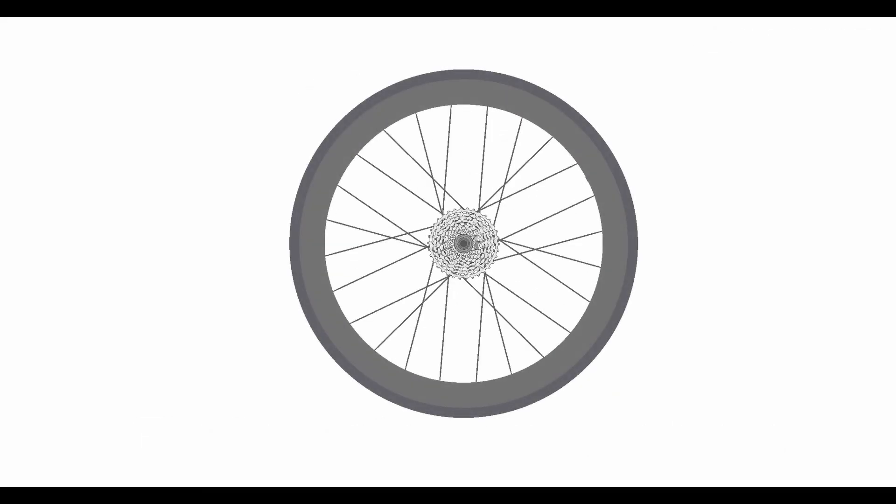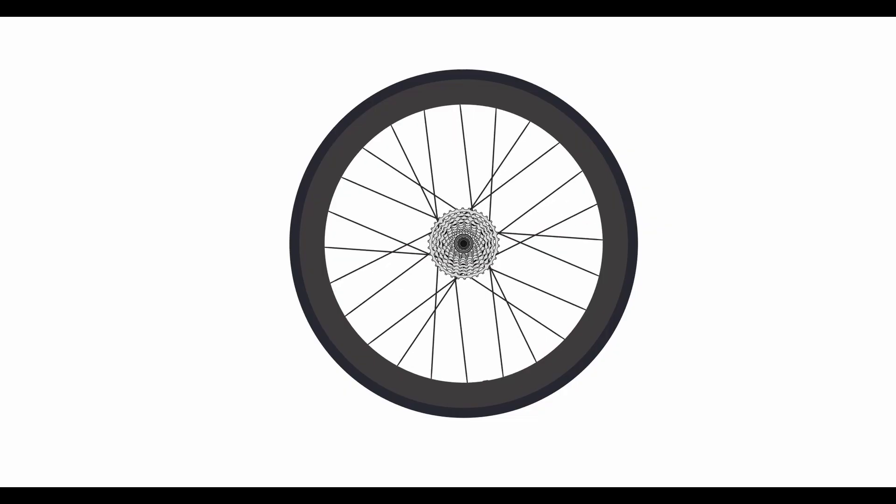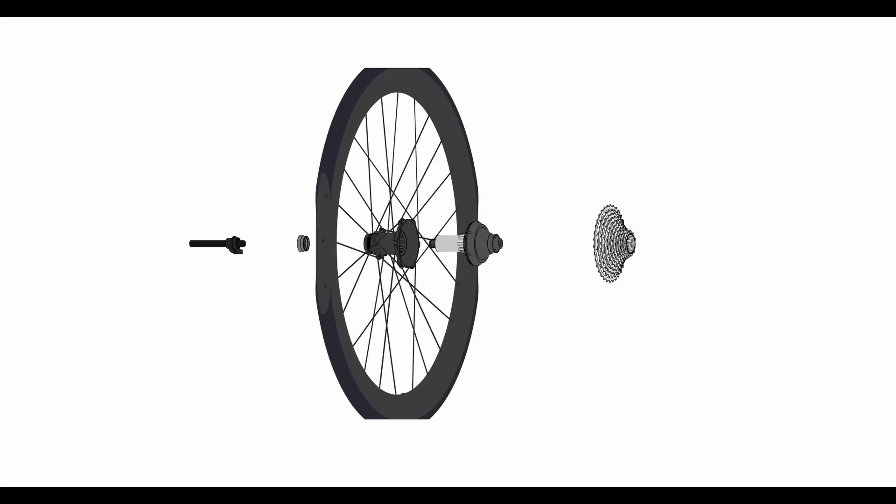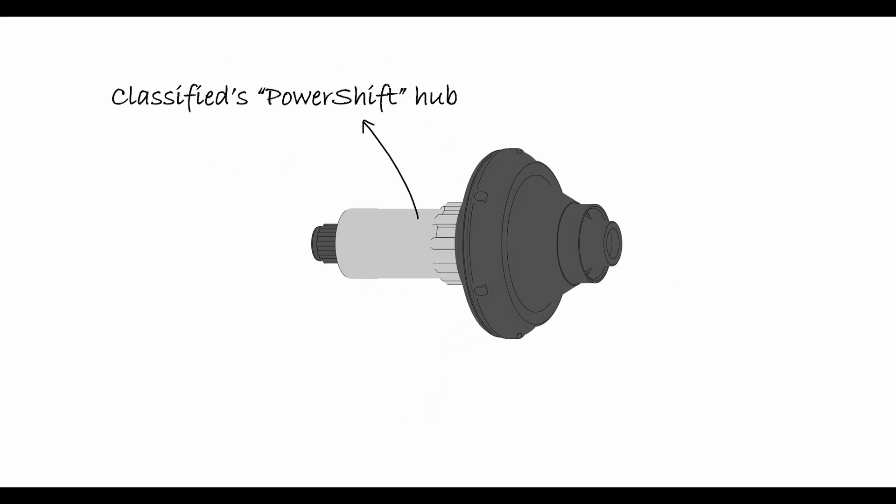Classified's PowerShift Hub is an innovative mechanism that connects the bicycle's rear wheel to the rear sprockets, or cassette. Contrary to a regular bicycle hub, Classified's PowerShift Hub contains a two-speed transmission.